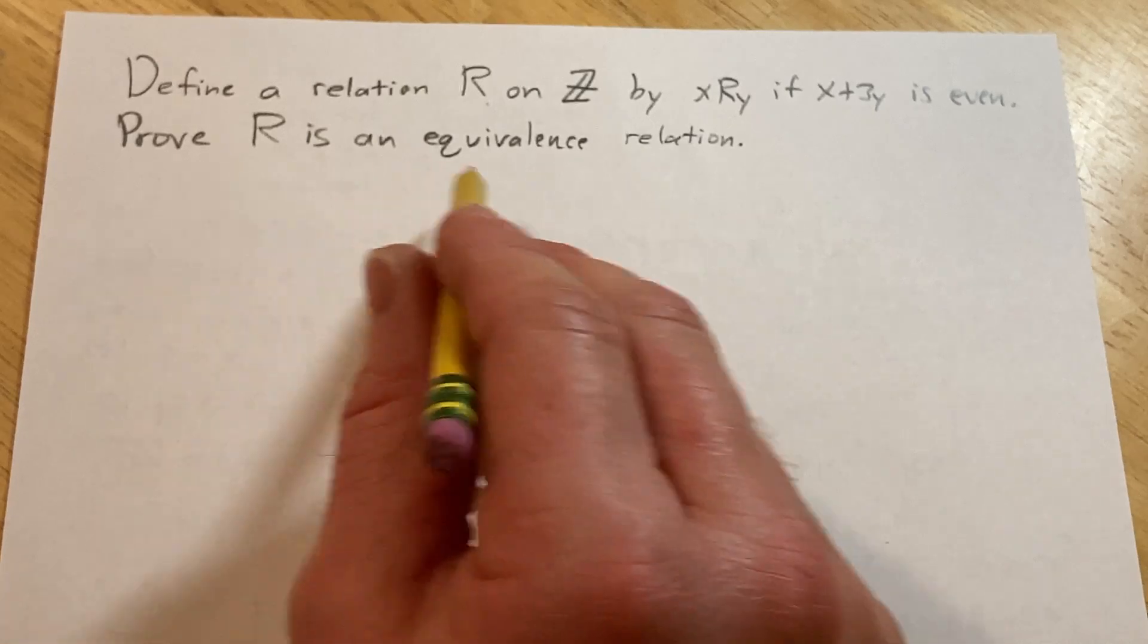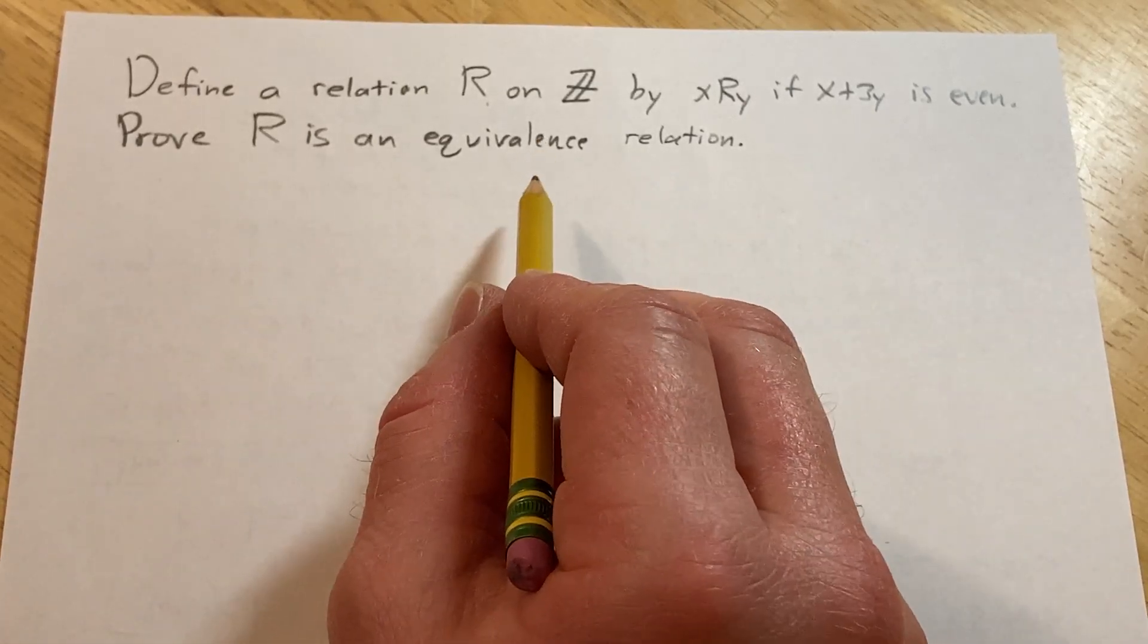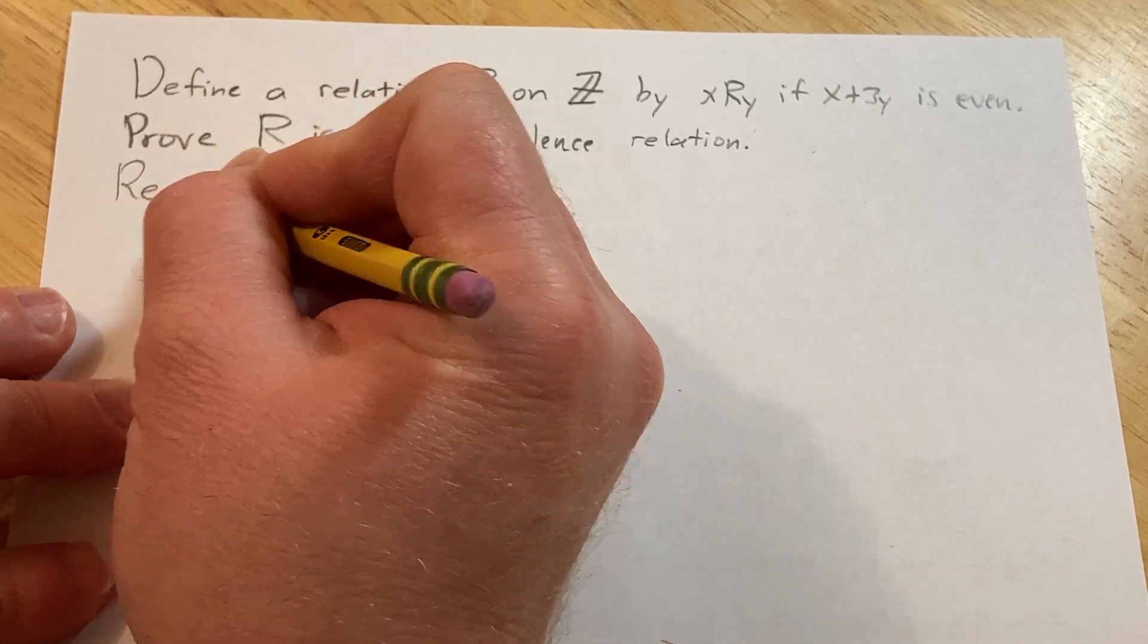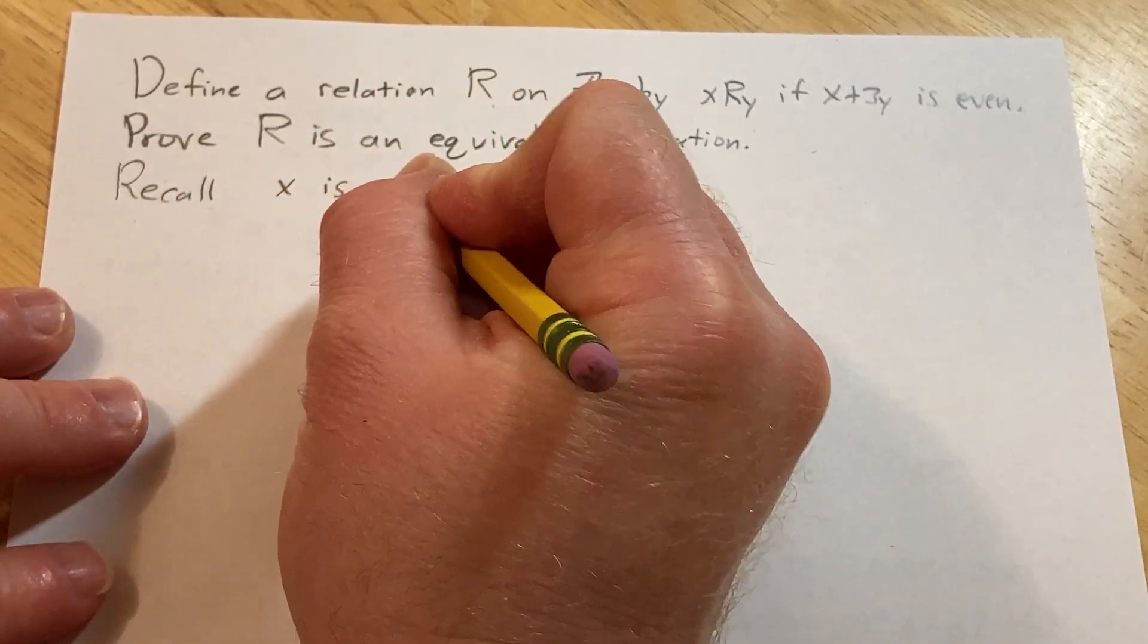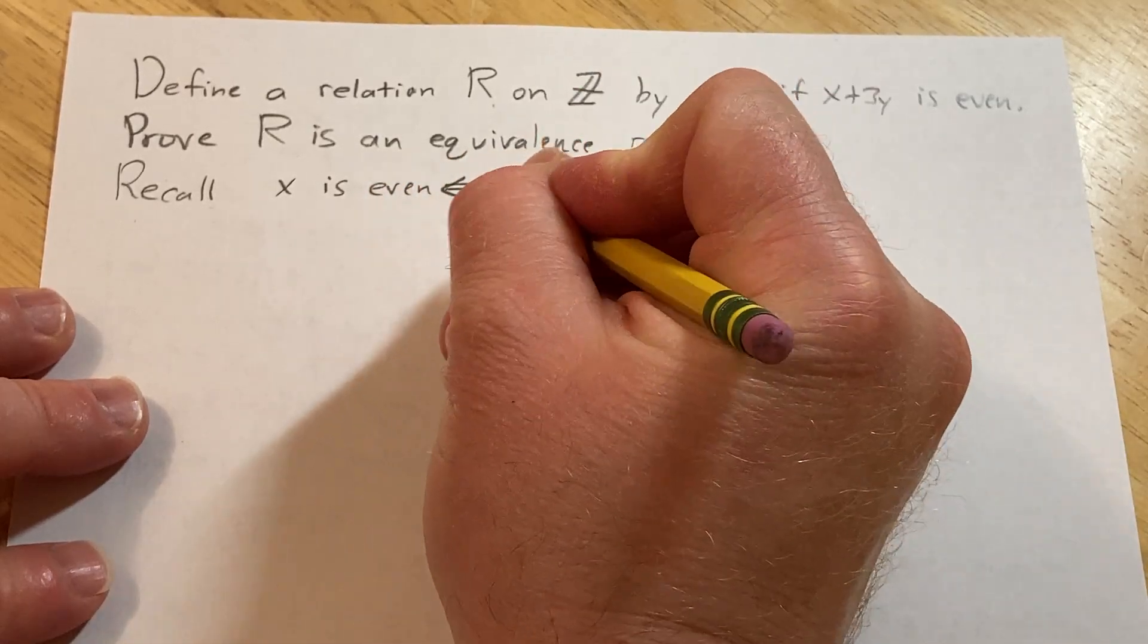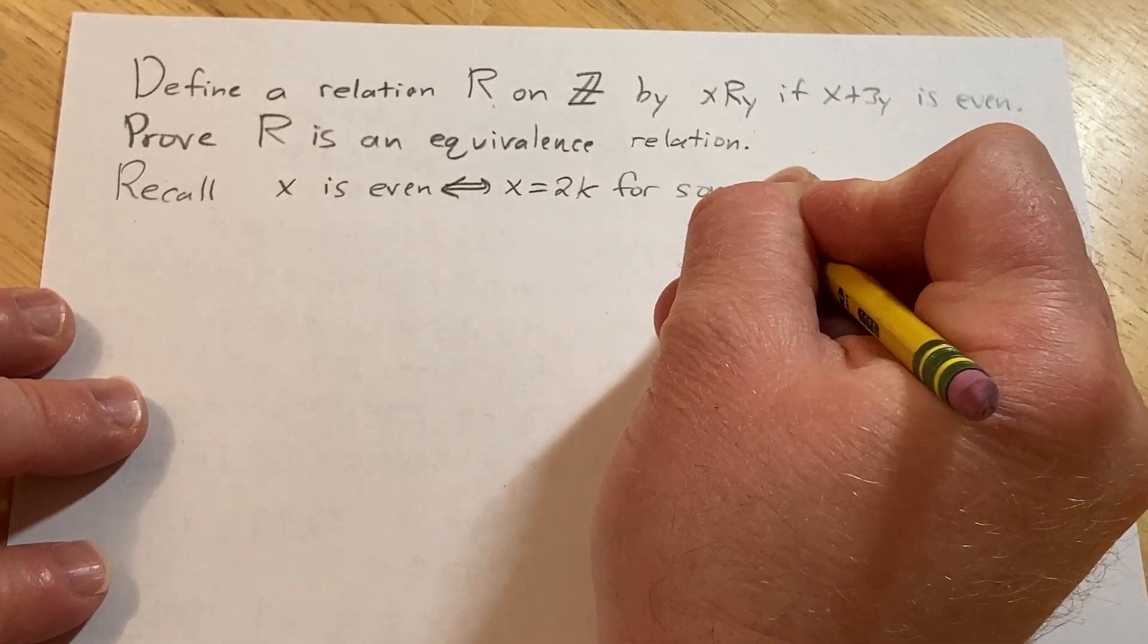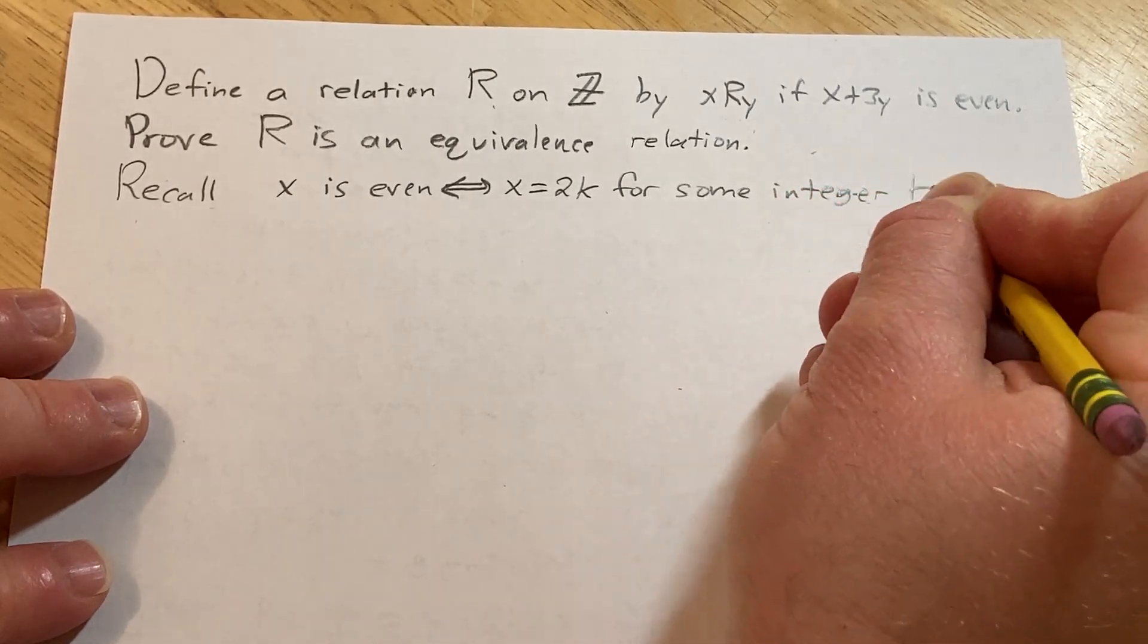First let me refresh your memory on some of the terminology used in this problem. What does it mean for an integer to be even? Recall that x is even means by definition that x is a multiple of 2. So x equals 2k for some integer k.